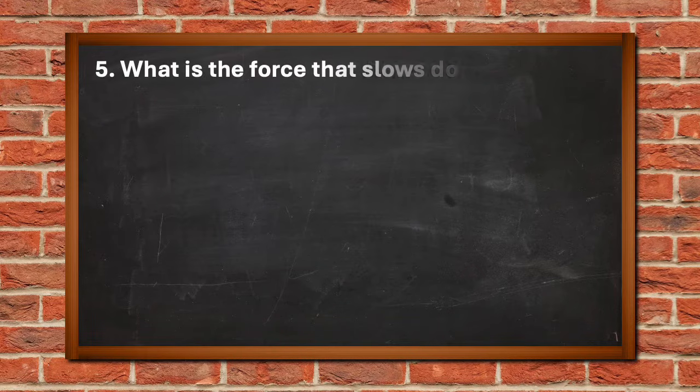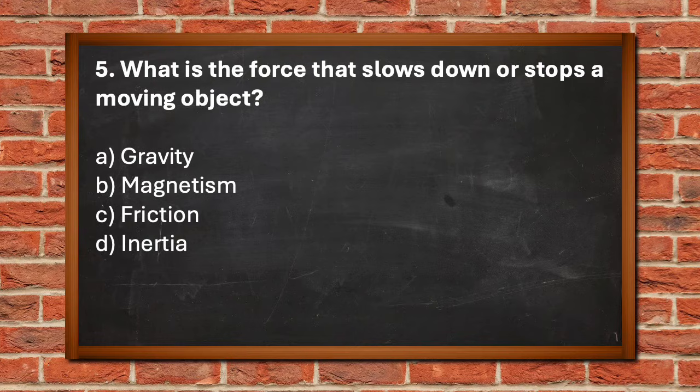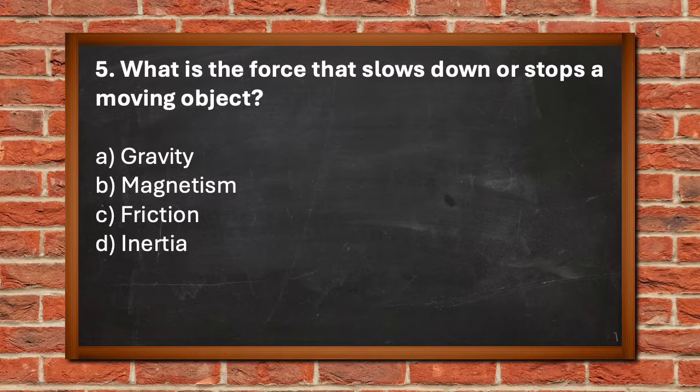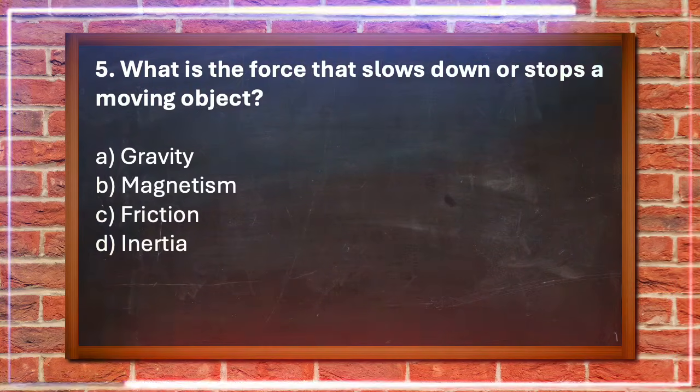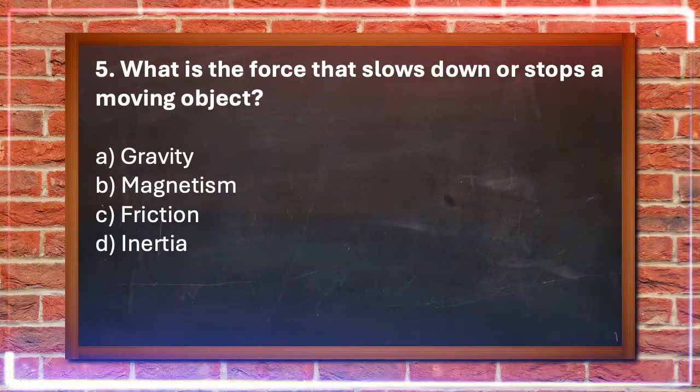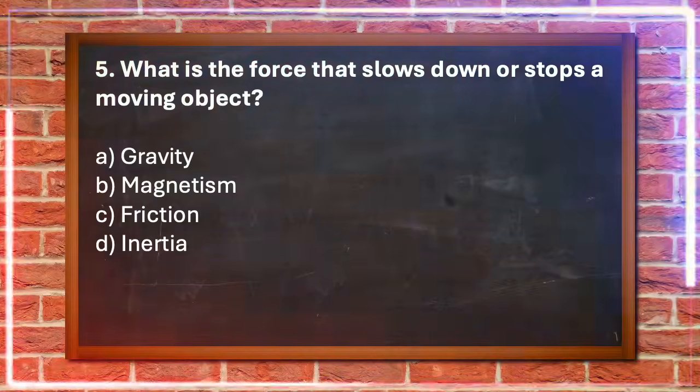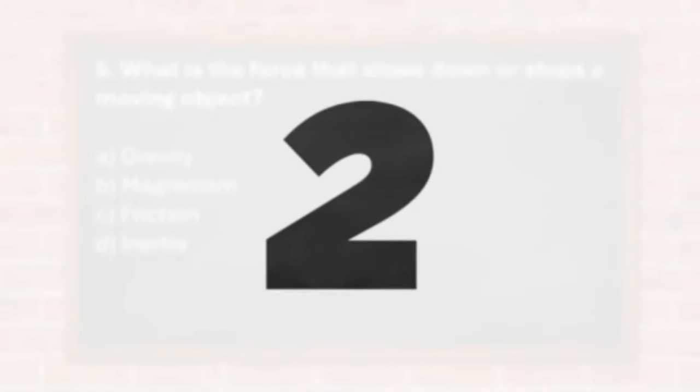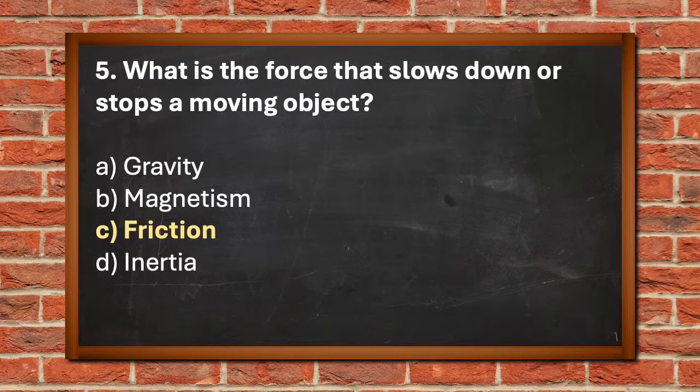Number five. What is the force that slows down or stops a moving object? A. Gravity, B. Magnetism, C. Friction, D. Inertia. The answer is C. Friction.